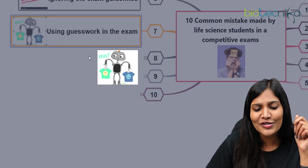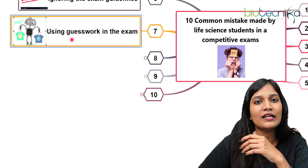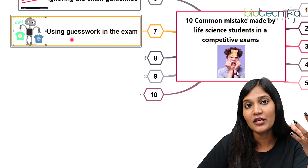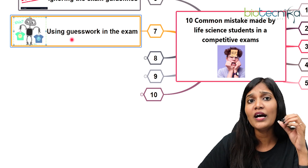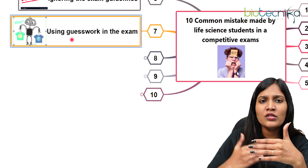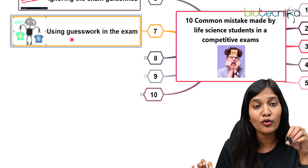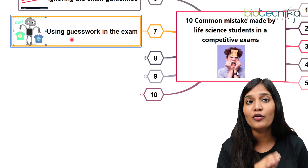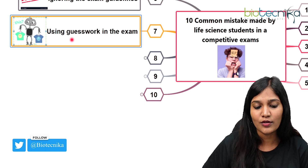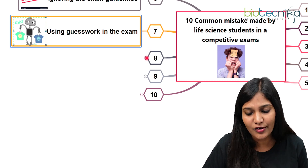The next mistake is using guesswork in the examination. Sometimes we think 'okay, this is the correct answer' and mark it. But most examinations have negative marking. If you're not 100% sure, it's not always a good idea to guess. If you have about 70 to 80% certainty, then you can go for a guesswork. But if you don't have any clue about it, never ever guess, because negative marking is going to be a greater barrier to your success.